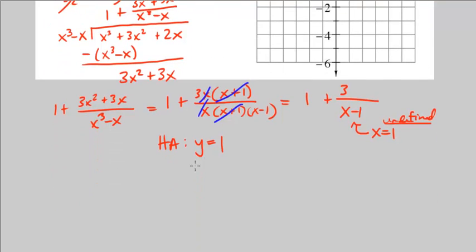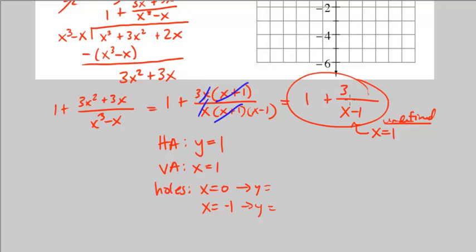So we have a horizontal asymptote at y equals 1. We have a vertical asymptote at x equals 1. And we have a hole at x equals 0 and another hole at x equals negative 1. How do we find the y values for these? Look at our expression. When x is 0, y equals 1 plus 3 over negative 1. So that's 1 plus negative 3 or negative 2. So that gives us the point 0 comma negative 2. When x is negative 1, we have 1 plus 3 over negative 1 minus 1. So that's 1 plus 3 over negative 2, which is negative 1 half. So that gives us the point negative 1 comma negative 1 half.